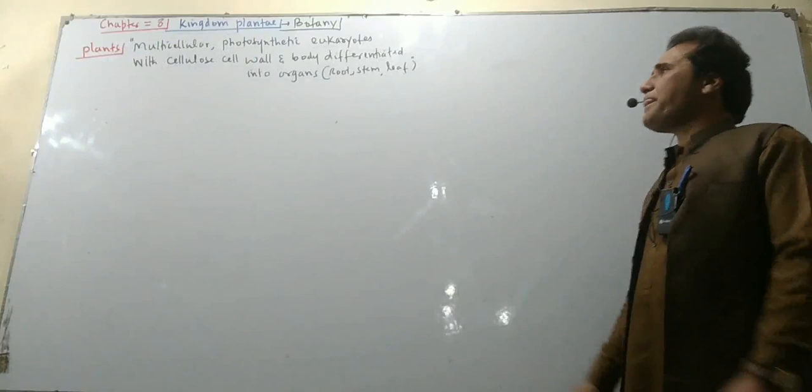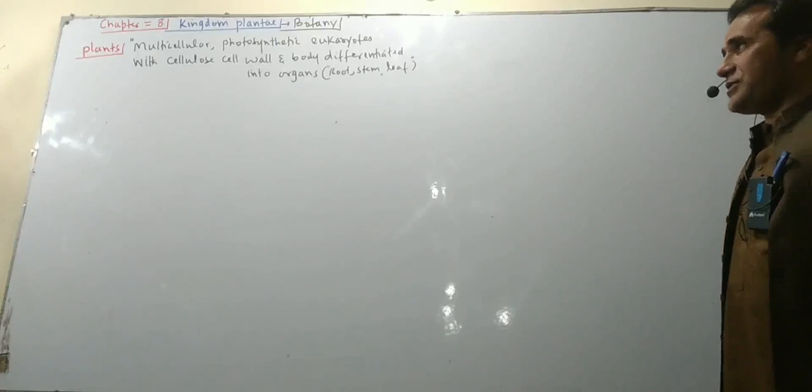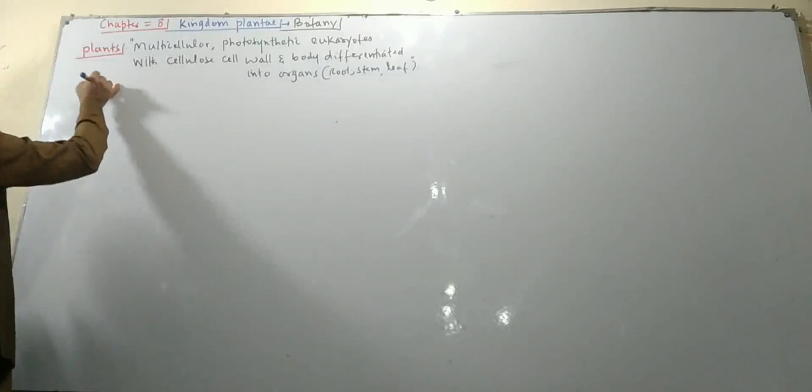Plants are multicellular. It is photosynthetic. It is a plant, and it has a leaf — that is a diagnostic character.